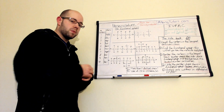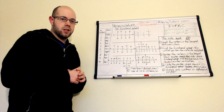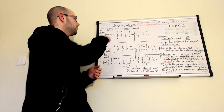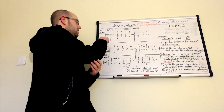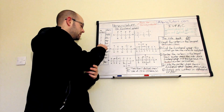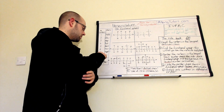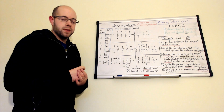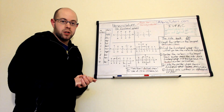Depending on the number of carbons in our molecule, we use a different root. So we have: 1 is meth, 2 is eth, 3 is prop, 4 is but, 5 is pent, 6 is hex, 7 is hept, 8 is oct, 9 is non, and 10 is dec. These are the prefixes for the root molecule.